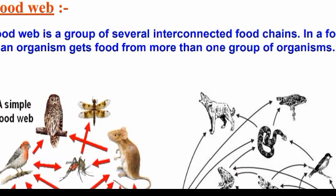Food web is the interconnection between a number of food chains. A food chain is one line: one grass, one frog, snake. When three or four food chains are interconnected, we call that group a food web.